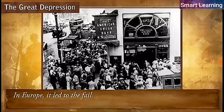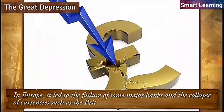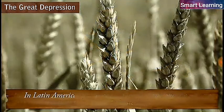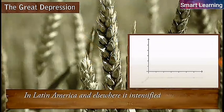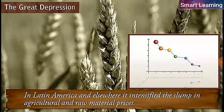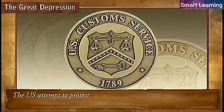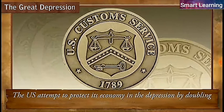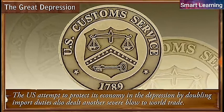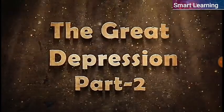The withdrawal of US loans affected much of the rest of the world, though in different ways. In Europe, it led to the failure of some major banks and the collapse of currencies such as the British pound sterling. In Latin America and elsewhere, it intensified the slump in agricultural and raw material prices. The US attempt to protect its economy in the depression by doubling import duties also dealt another severe blow to world trade.